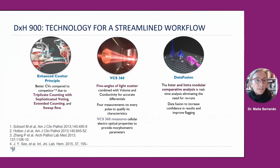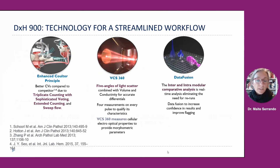So let's start talking about the DXH 900 technology for a streamlined workflow. This analyzer has three main principles: the first one, an enhanced Coulter principle; the second one, the BCS 360 for five angles of light scatter; and then data fusion information.